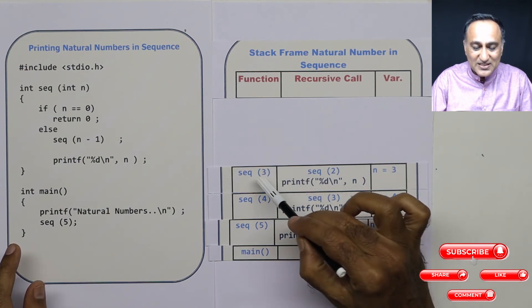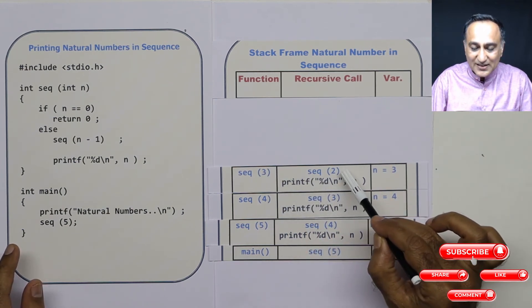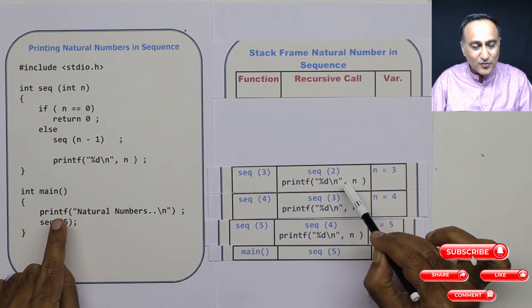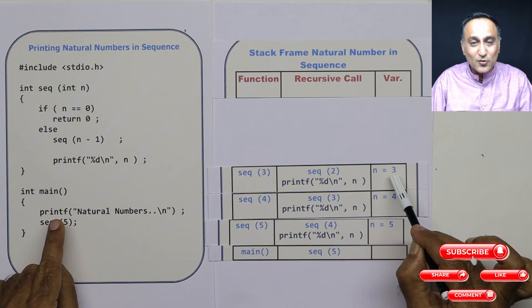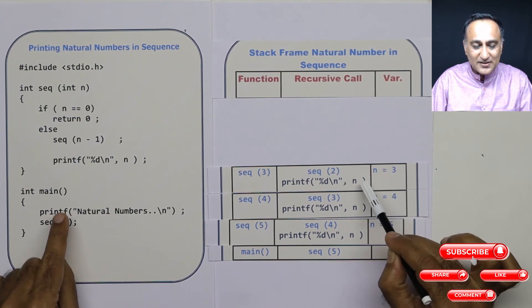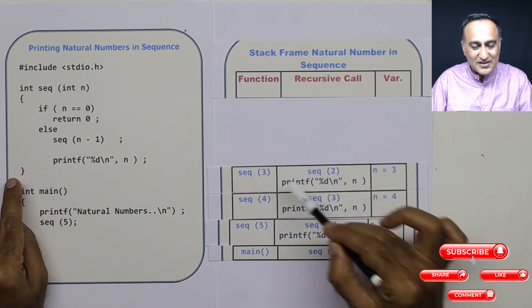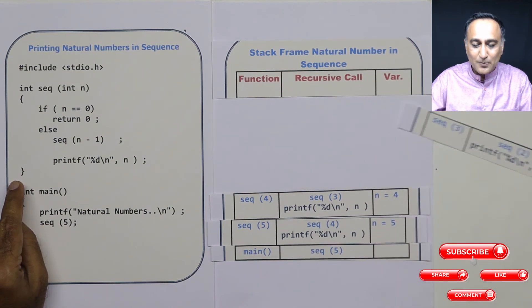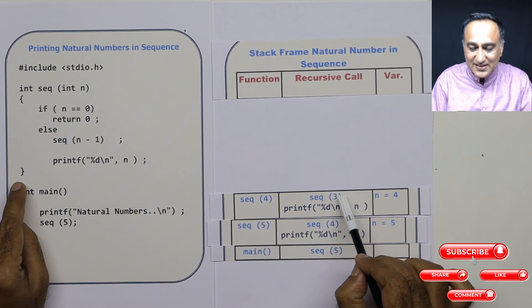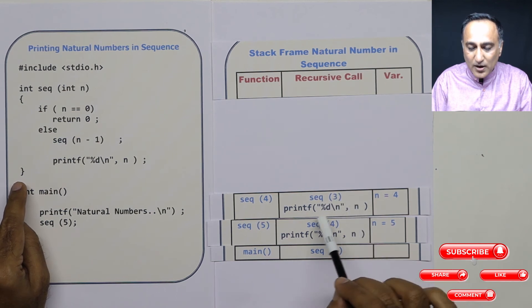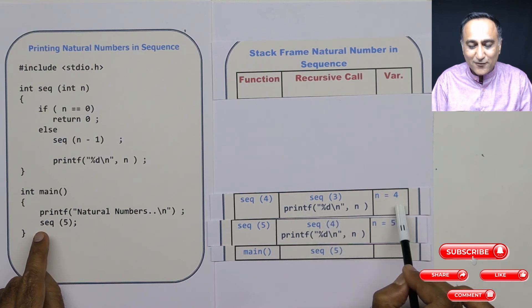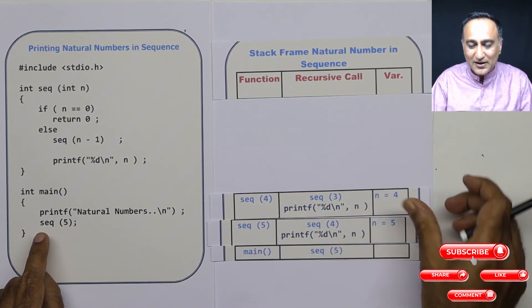So what happens? Sequence(3) is now active. Sequence(2) was already calculated, so printf is left. When printf executes, 3 was the value of n — so now it's going to print 3. Since 3 is printed, this function completes and sequence(3) gets popped out. Now since sequence(3) is calculated, I'm going to do the printf in sequence(4). In sequence(4), n is 4, so I'm going to print 4.